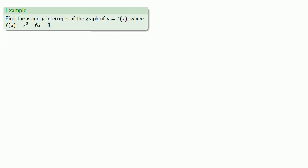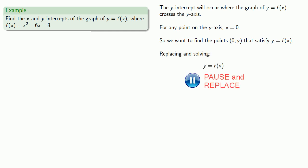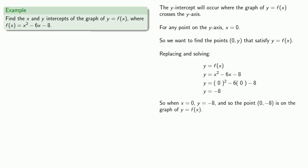How about some intercepts? Let's find the x and y intercepts of the graph of y equals f of x, where f of x is x squared minus 6x minus 8. The y-intercepts will occur where the graph crosses the y-axis. Remember that for any point on the y-axis, x is equal to zero. So we want to find the points (0, y) that satisfy y equals f of x. Equals means replaceable, so let's replace and solve. When x equals 0, y equals negative 8. So the point (0, -8) is on the graph and it's the y-intercept.